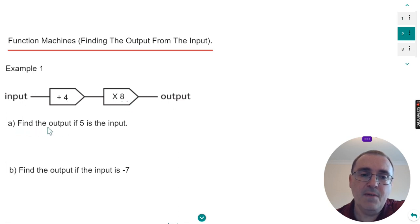Part A tells us to find the output if five is the input. First of all let's write down our number five. The first thing we need to do then is add four to five. So five add four is nine.